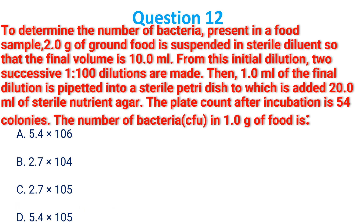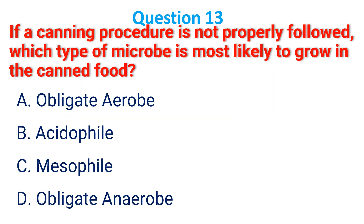To determine the number of bacteria present in a food sample, 2 grams of ground food is suspended in a sterile diluent so that the final volume is 10 ml. From this initial dilution, two successive 1-to-100 dilutions are made. Then 1 ml of the final dilution is pipetted into a sterile Petri dish and 20 ml of sterile nutrient agar is added. The plate count after incubation is 54. The number of bacteria per gram of food is the correct answer B: 2.7 × 10⁴ CFU.